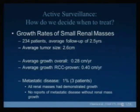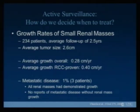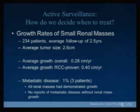How do we decide when or if to treat? We have biopsy, which can be helpful, but the growth rate is really the mainstay of how we decide. A study looked at over 200 patients with an average follow-up of two and a half years. The average growth rate overall was about 0.28 centimeters per year, which is small — and smaller than the average growth rate for RCC-proven masses at 0.4 centimeters per year. If there is an increased growth rate, that pushes us toward intervention. In that study, only 3 of 234 patients had metastatic disease, and all three had some kind of growth — so there were no reports of metastatic disease without renal mass growth.